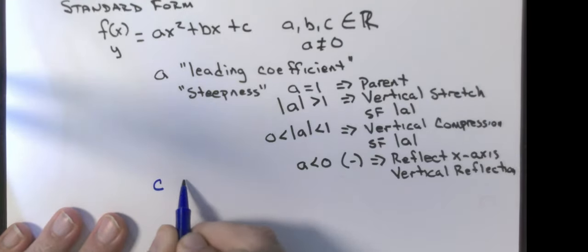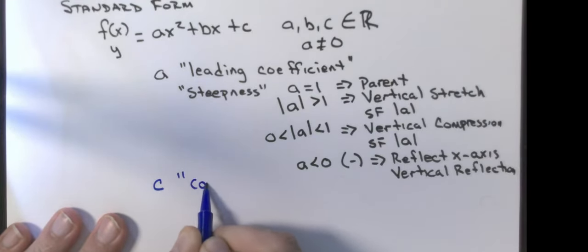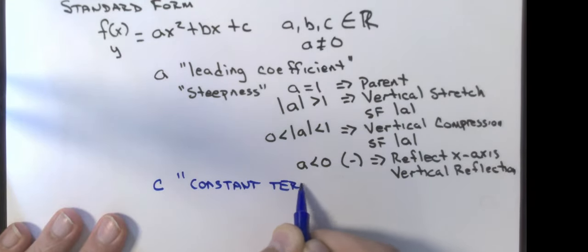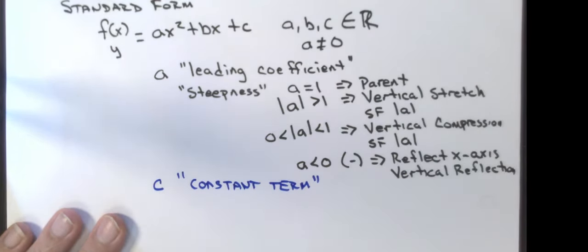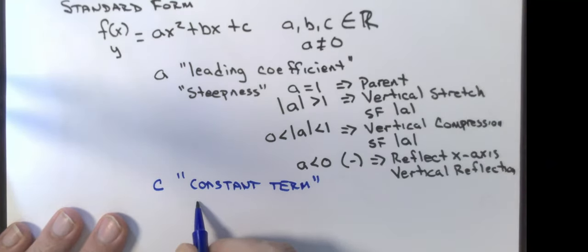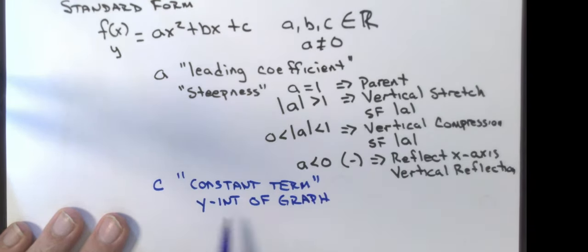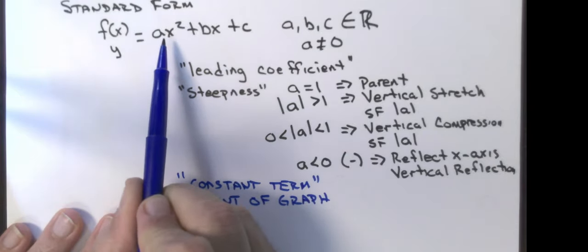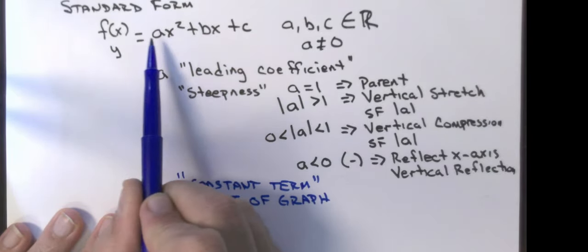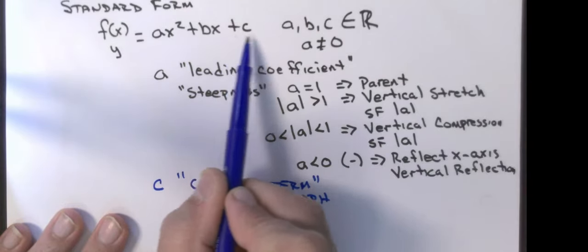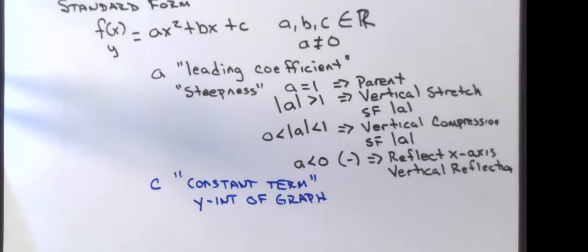b is called the constant term. And c gives you the y-intercept of the graph — specifically the y-coordinate of the y-intercept. Because you find a y-intercept by putting zero in for x, the first two terms disappear and you're left with just c, which is the y-intercept.